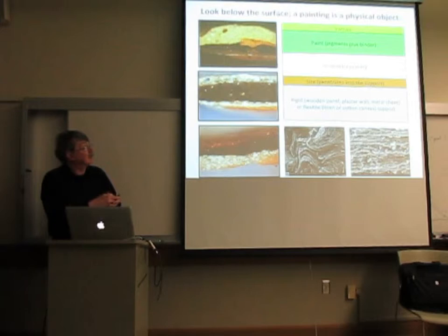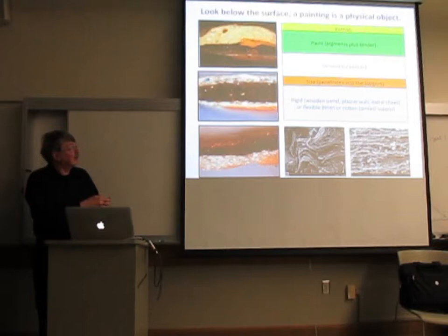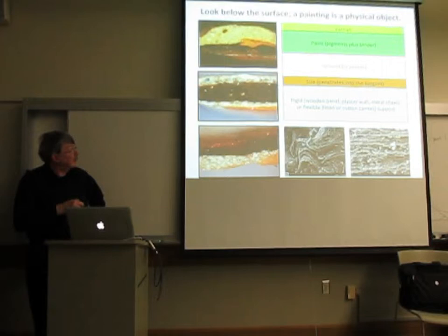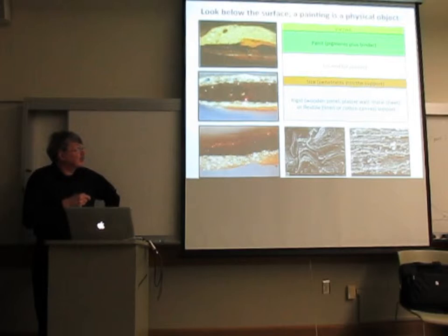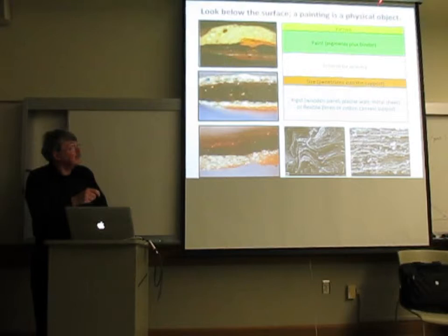A varnish may or may not be applied on top. Here are cross-sections of paint layers showing that it's not one color — it's a whole stack of layers. The ones at the bottom may be the ground itself, for example a brown ground, and the artist has built up a variety of colors using whatever technique was employed. Some of these layers may be intentionally transparent — that's a common technique.